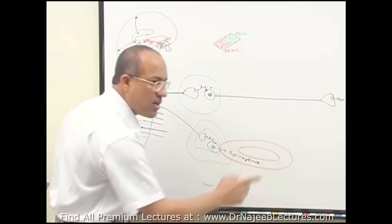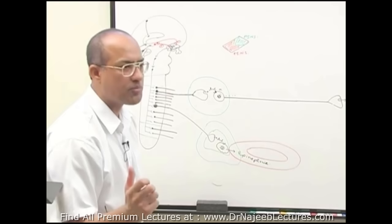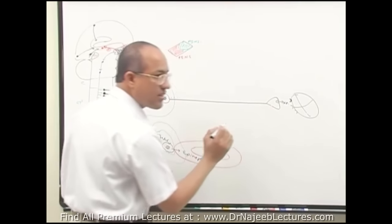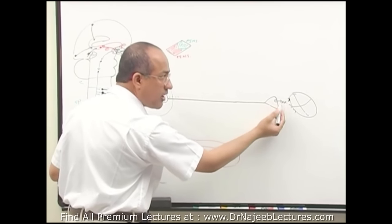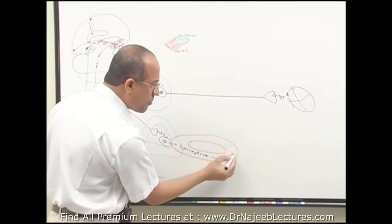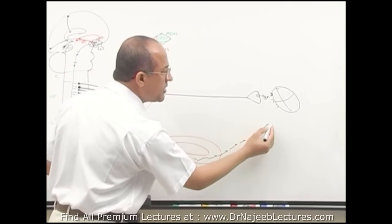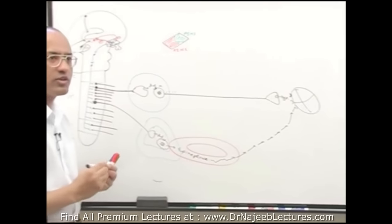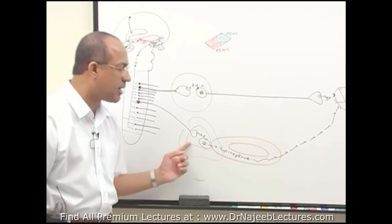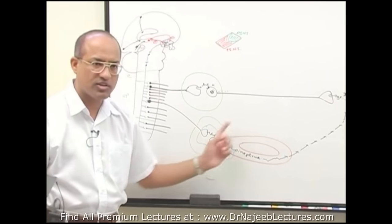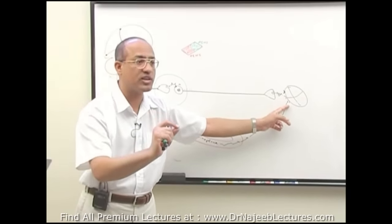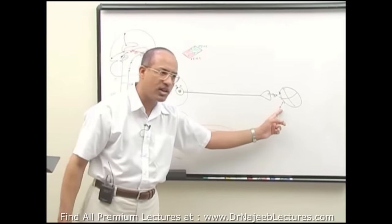So the sympathetic nervous system acts through two routes: norepinephrine released via nerve endings at neuroeffector sites, and epinephrine released from the adrenal medulla into general circulation. Both can stimulate adrenergic receptors wherever they are present in the body — either through direct innervation (norepinephrine) or through the bloodstream (epinephrine).